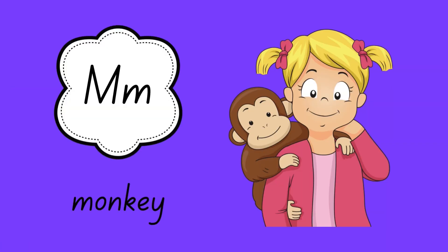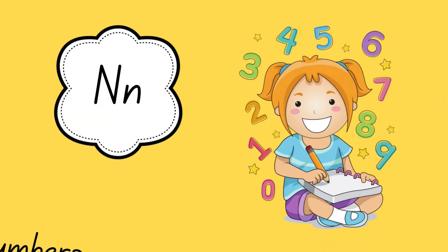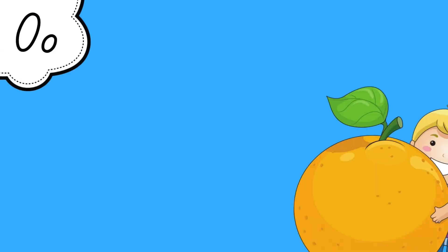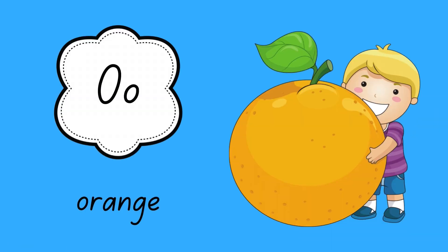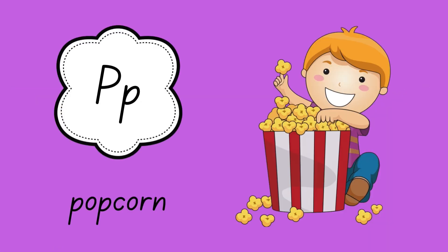M is for monkey. N is for numbers. O is for orange. P is for popcorn.